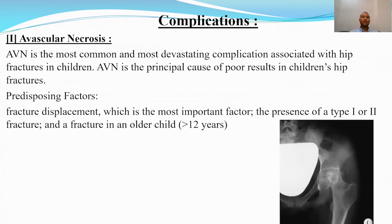Regarding complications associated with pediatric hip fractures, the most common and most devastating complication is AVN. The most important predisposing factor is fracture displacement at the time of initial trauma. AVN is most common in Type 1 and Type 2 fractures and is more common in older children above 12 years old.